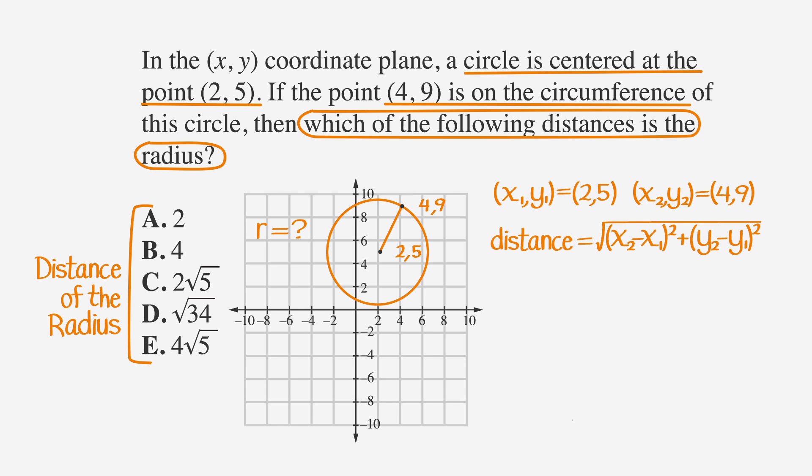Distance equals the square root of x2 minus x1 squared plus y2 minus y1 squared. When we plug in our numbers, we get the square root of four minus two squared plus nine minus five squared, which is the square root of two squared plus four squared, or the square root of four plus sixteen, which is the square root of twenty.